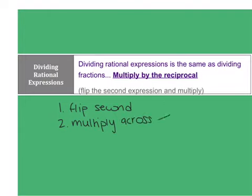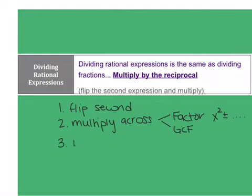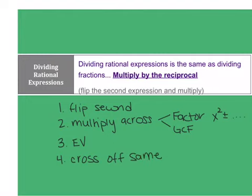When multiplying across, you may have to factor — we factor if they have an x squared plus or minus something. Also don't forget about GCFs. Then we find our EVs, our excluded values, and then we cross things off — cross off same things. The only new step here is that first step: flip the second.